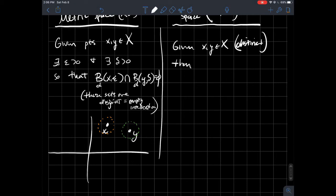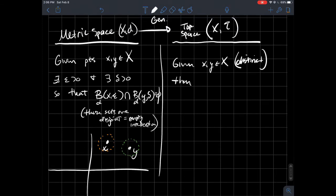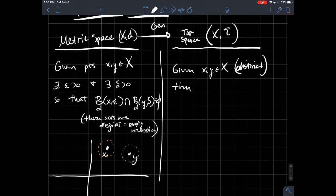So what do we want to do? What do we do in the metric space setting? We found two disjoint open balls. What do we want to do here? We just want to look in our topology and see if there are two disjoint open sets. That's really all we'll say.